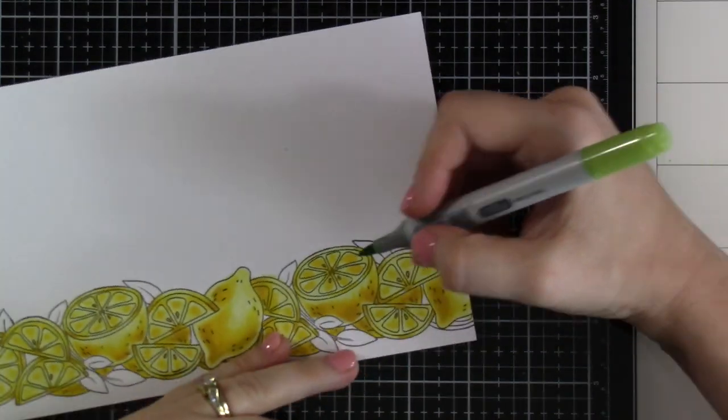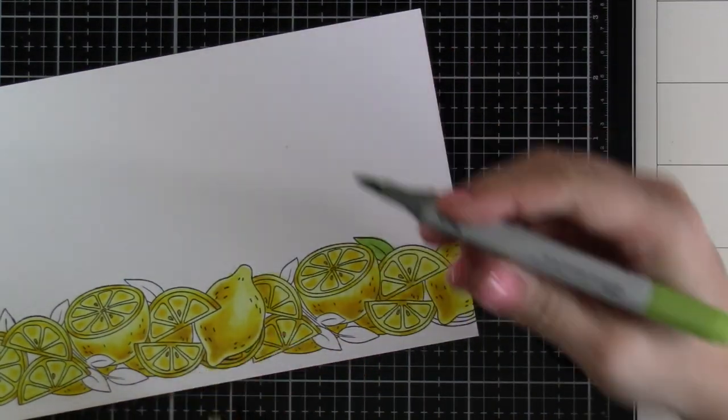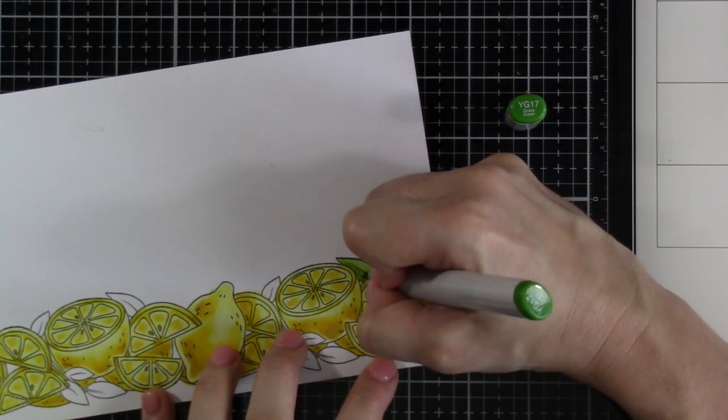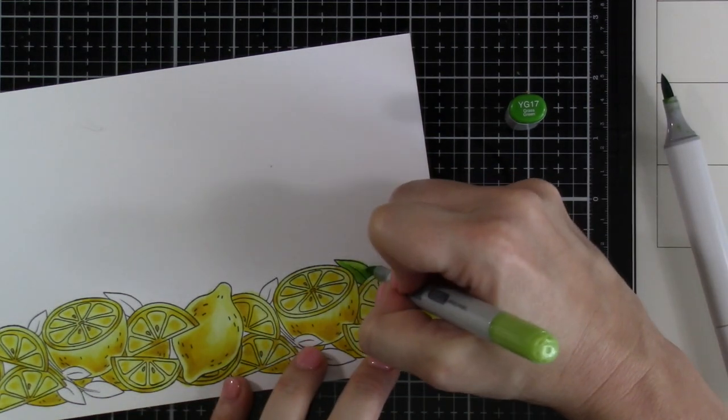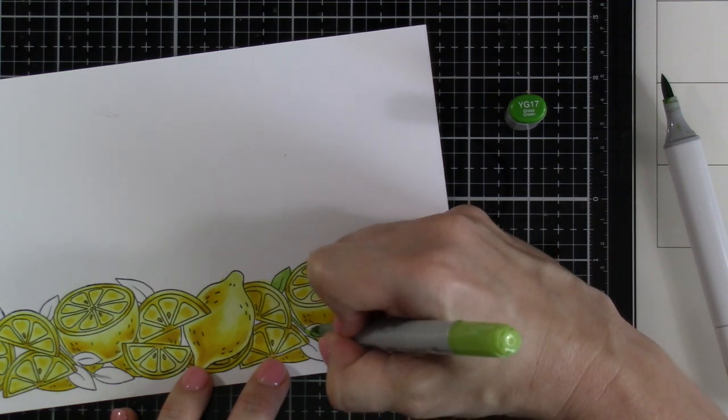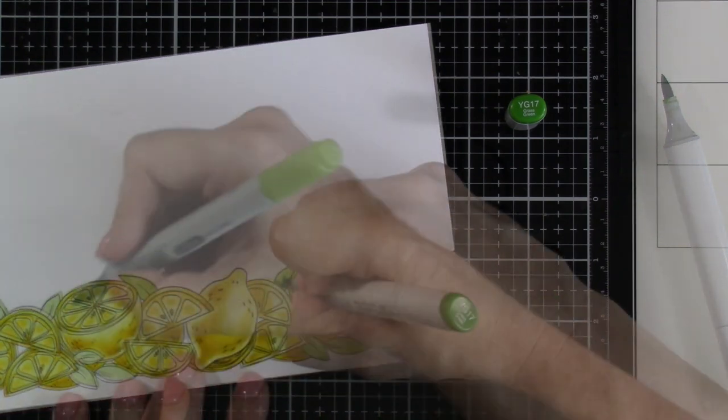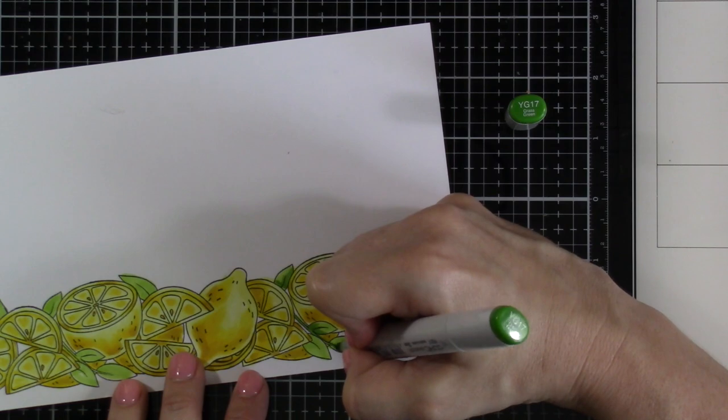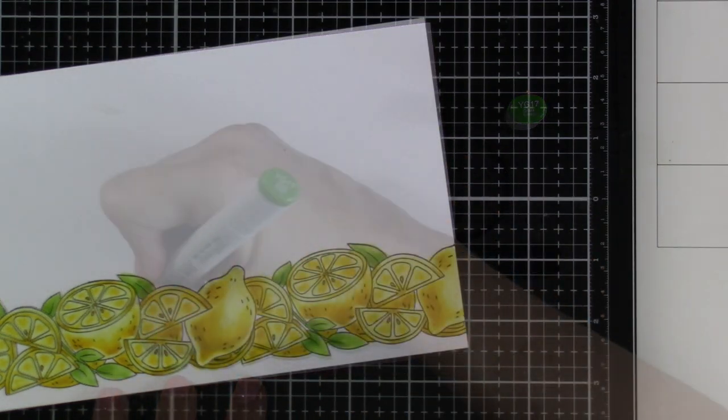I'm only going to do a two-color blend for the leaves, and I won't show you all of them because it's a lot of repeats, but we've got YG03 and YG17. And then I blend those out. And then we're going to do the same thing with these little leaves here, same colors. And then we end up blending those out a little bit more too.